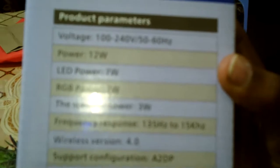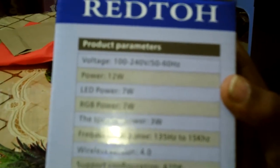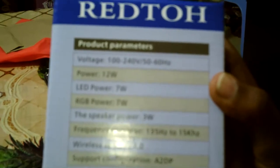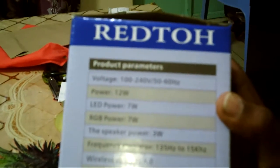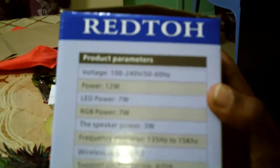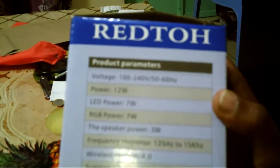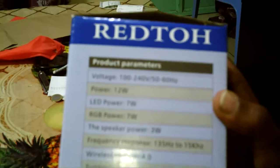RGB power is 7 watts, speaker power is 3 watts, wireless version is 4.0, support configuration is A2DP, and radio range is 10 meters which is 33 feet. LED light color: white or warm white.